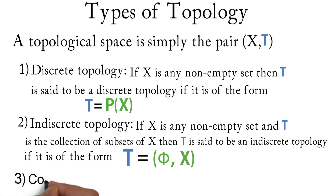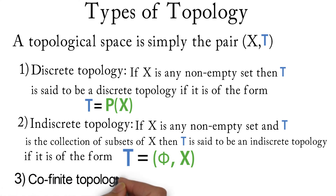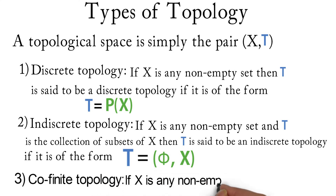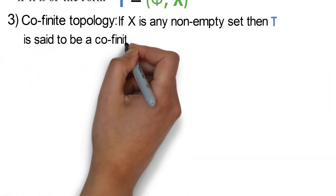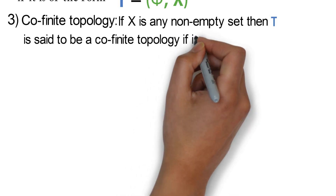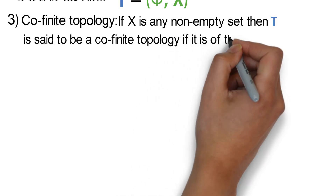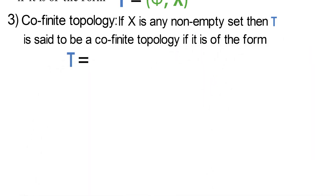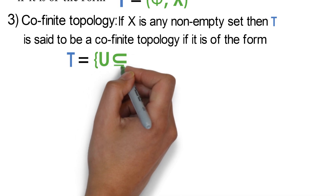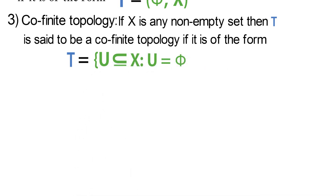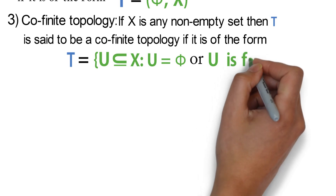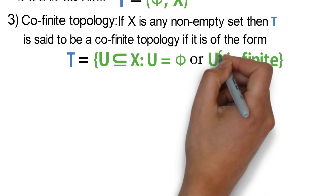Number 3 is the co-finite topology. If X is any non-empty set, then tau is said to be a co-finite topology if it is of the form tau equals the set of U subset of X such that U is equal to the empty set, or the complement of U is finite.